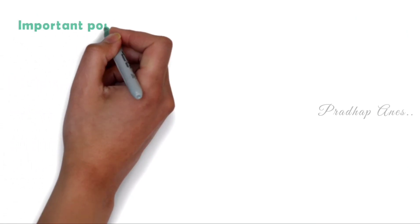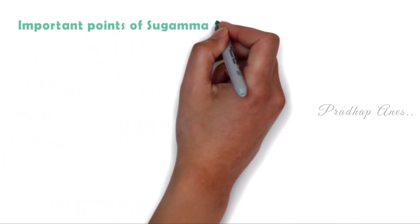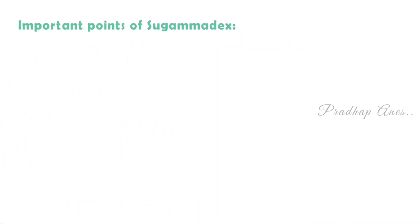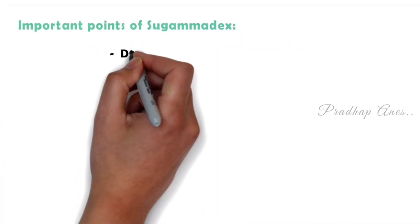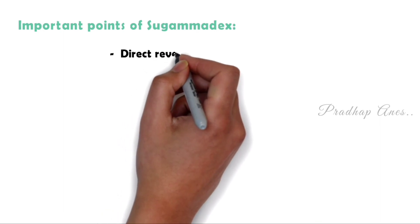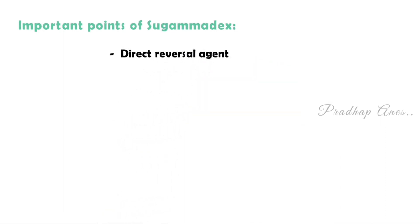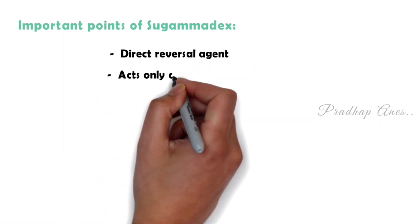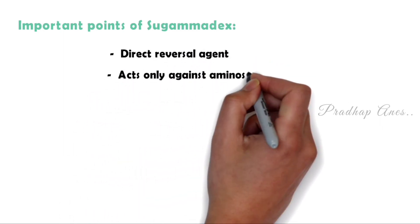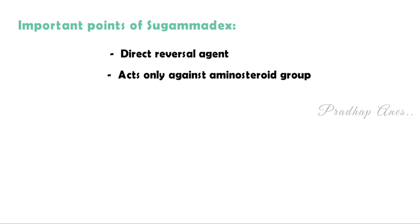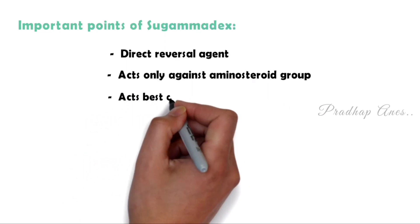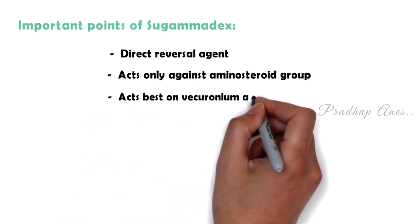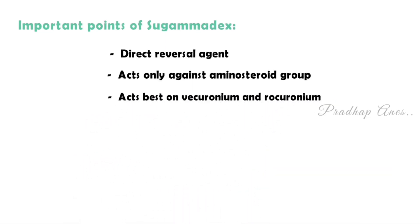Important points of sugammadex: it is a direct reversal agent, it acts only on the aminosteroid group, and it works best on vecuronium and rocuronium.